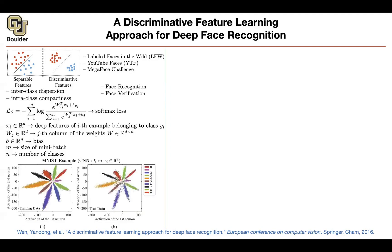Let's look at a simple example. We create a simple CNN that takes an image as input and outputs a vector in two dimensions, then from two dimensions goes to ten dimensions for ten classes. Focusing at the feature level, you have the activation of the first neuron and the second neuron — you can visualize your data and color code them according to their class. You can see that the softmax loss gives you separable types of features, and looking further at your test data, you can see there are some confusions appearing.